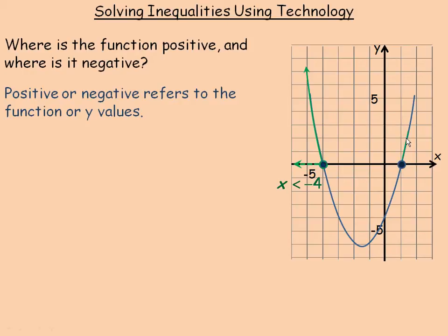There's another place over here to the right of the graph where the y values are all positive. The interval for x is to the right of that point, and again that point is not included — the open circle means you don't include it. The interval for x is x is greater than one, and any value of x bigger than one has positive y values.